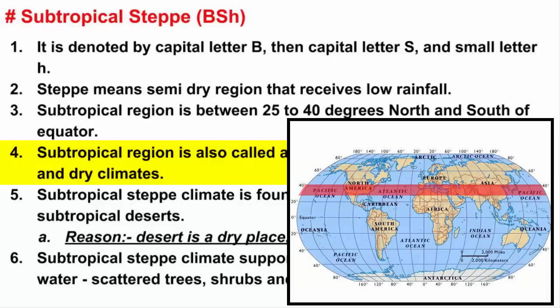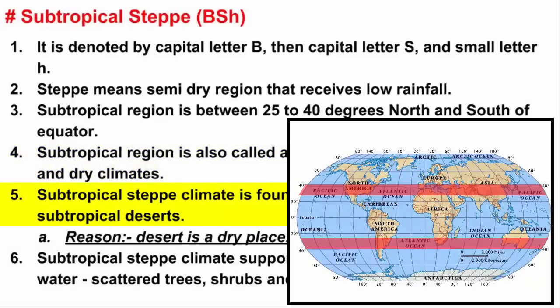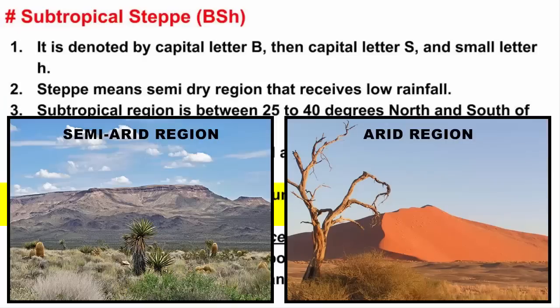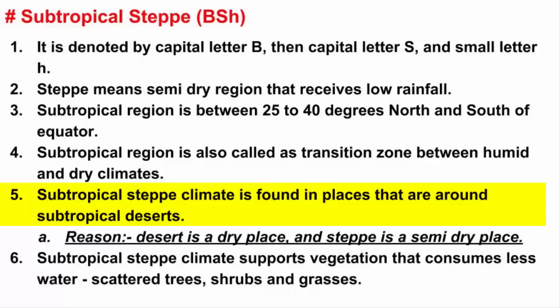In a nutshell, subtropical steppe climate is found in between the latitudinal range shown shaded in red color on the world map. However, not all regions within this latitudinal range have subtropical steppe climate. To find places with subtropical steppe climate, we need to look for places that are nearer to a desert, because a desert is a dry place and steppe is a semi-dry place. That means subtropical steppe receives slightly more rainfall than the desert, so that there is some growth of plants and grasslands. We need to find the deserts that exist in the subtropical region, and the places right next to those deserts will have subtropical steppe climate.